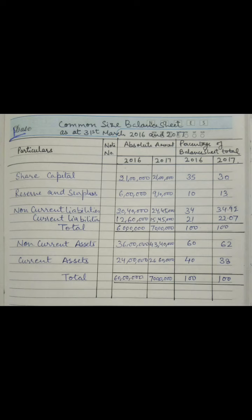After writing all the absolute amounts in the columns for 2016 and 2017, we need to find the percentage of balance sheet total. For this we have to divide each particular item for the year 2016 and 2017 individually by their respective total amount and then multiply by 100. For example, in 2016 the share capital is 21 lakhs and the total is 60 lakhs, so we divide 21 lakhs by 60 lakhs and multiply by 100.